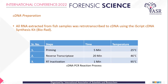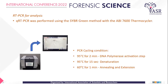We cannot perform RT-PCR directly on RNA, so we reverse-transcribed it to complementary DNA. The three stages of reverse transcription were: priming for 5 minutes at 25°C, reverse transcription for 20 minutes at 46°C, and reverse transcriptase inactivation for 1 minute at 95°C. After that, we performed RT-PCR analysis using an ABI 7500 thermocycler with the SYBR Green method, in which the dye binds the complementary DNA strands. The fluorescent signal is detected and the CT value — the cycle threshold value — is calculated to determine RNA degradation across samples.